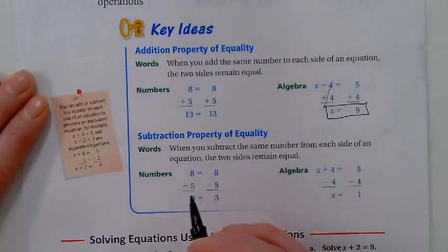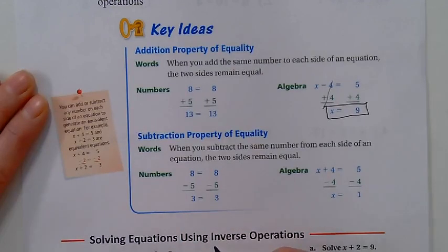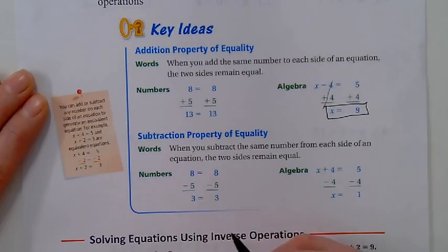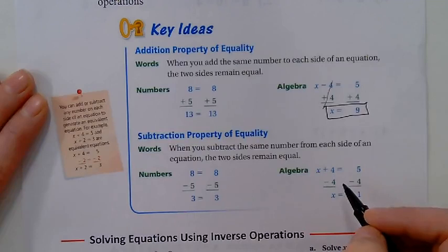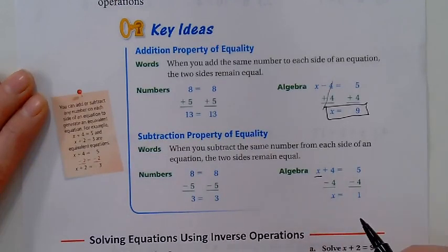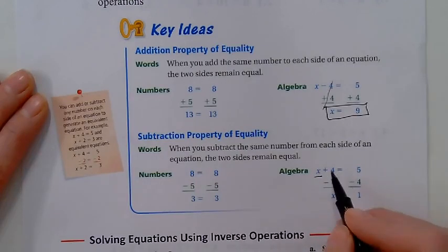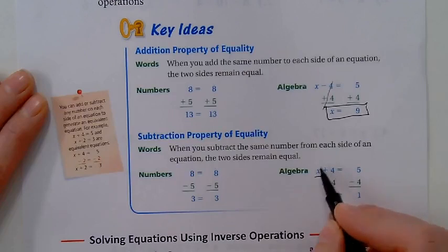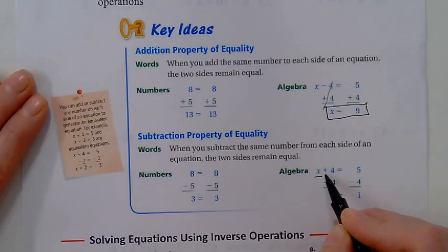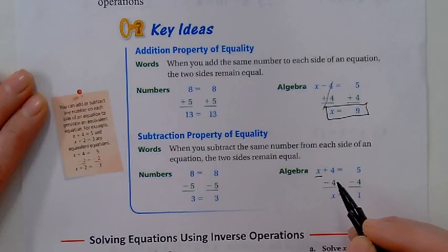Subtraction has the same equality property. If I subtract 5 from one side, I have to subtract 5 from the other side. This still balances—3 equals 3, we're good. So same thing over here. Right now x plus 4—I want x by itself. I want it to say x equals something, so I have to get rid of all this nonsense next to it.